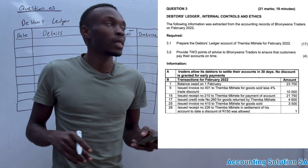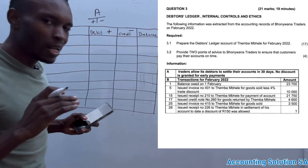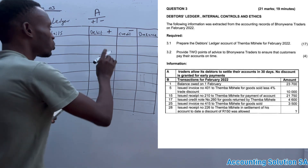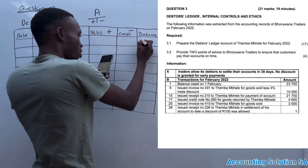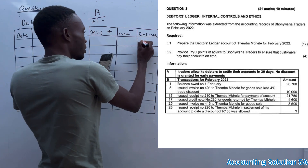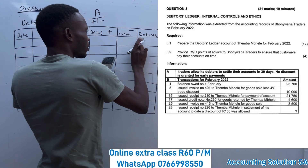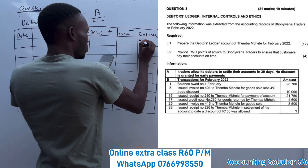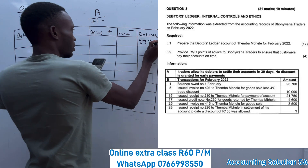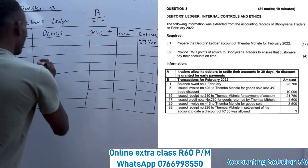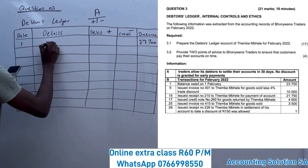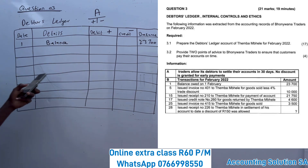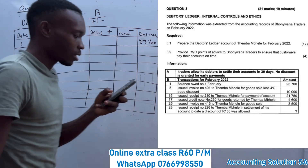Transaction number one: the balance owed on 1 February is R23,700. The balance is very simple — you don't debit or credit it, you just go straight to the balance column and write 23,700 on the first, and name it 'balance'.